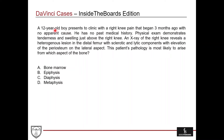So that's important — you've got a kid with knee pain and no trauma. He has no past medical history. Physical exam demonstrates tenderness and swelling just above the right knee. An x-ray of the right knee reveals a heterogeneous lesion in the distal femur with both sclerotic and lytic components and elevation of the periosteum on the lateral aspect. The question is: this patient's pathology is most likely to arise from which aspect of the bone?